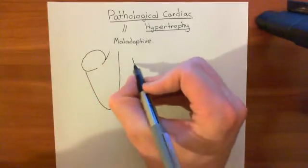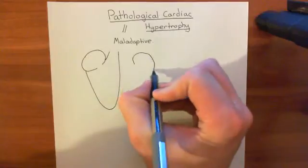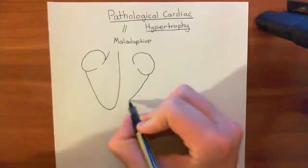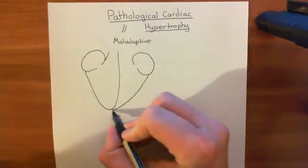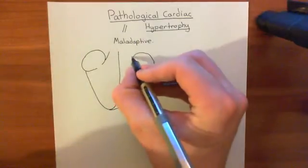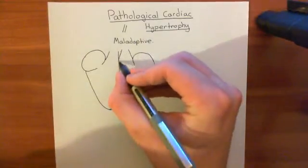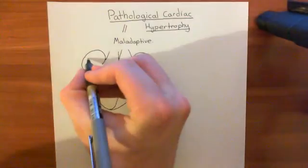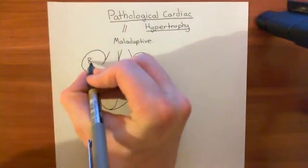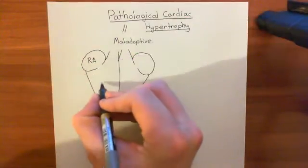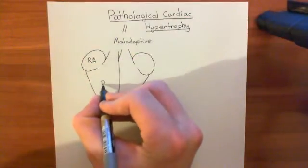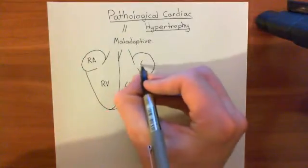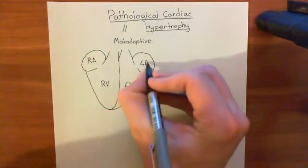And over here, this is the left atrium with the left ventricle here, and with the aorta coming off here. Let's label these up: this is the right atrium — RA; this is the right ventricle — RV; this is the left ventricle — LV; and this is the left atrium.